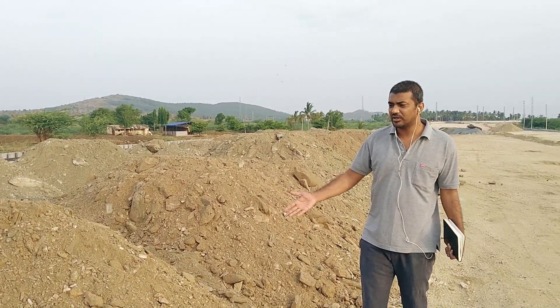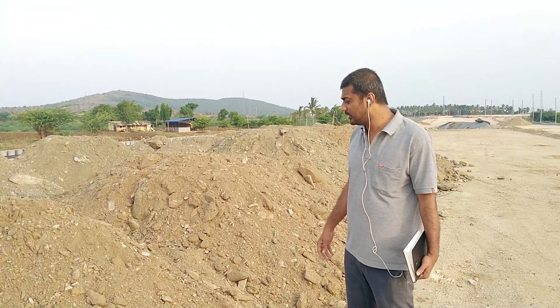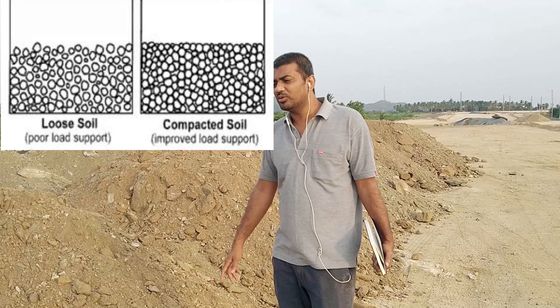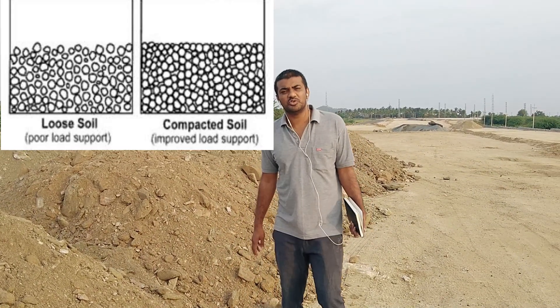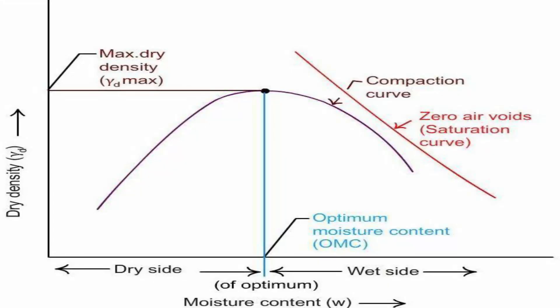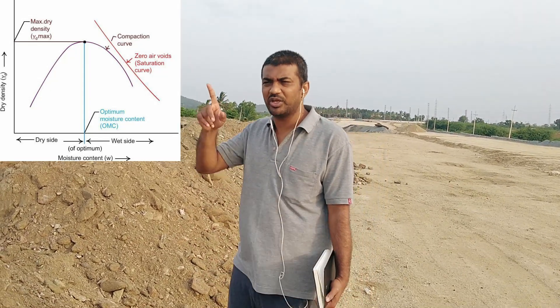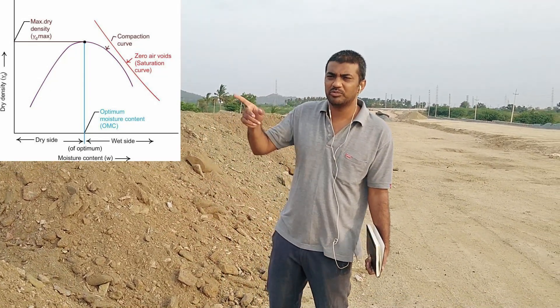With good rearrangement of soil grains, we can achieve good density. As you have gone through the compaction units in geotechnical engineering, this compaction is carried out using the Standard Proctor and Modified Proctor tests. The x-axis stands for water content and the y-axis stands for dry density. From the compaction curve, we obtain the OMC — Optimum Moisture Content — and MDD — Maximum Dry Density.